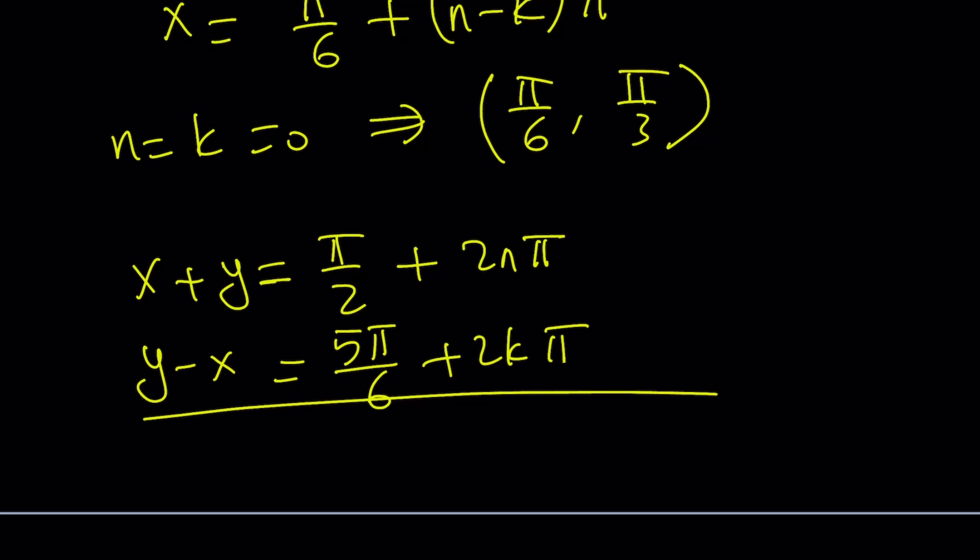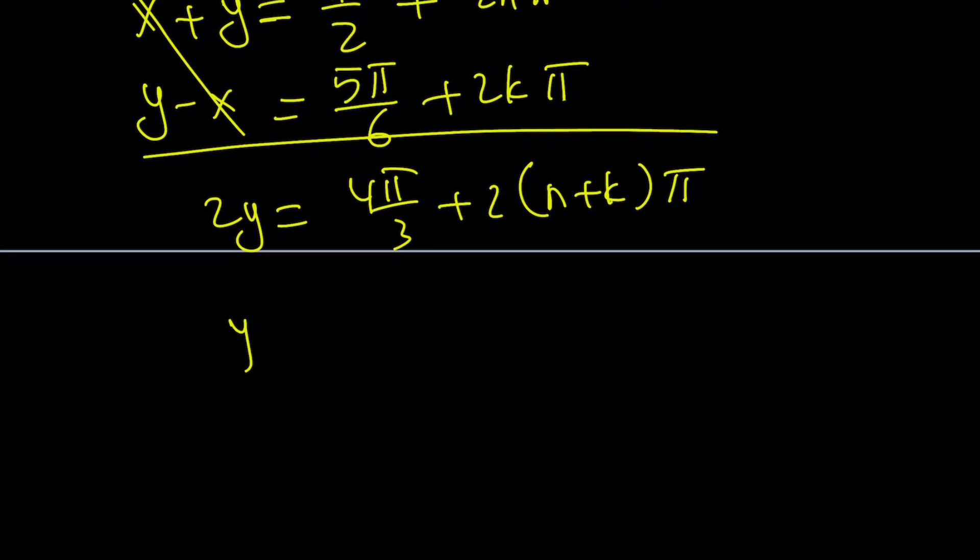We're going to add these up. x cancels out, 2y equals 3 pi over 6, 8 pi over 6, which is 4 pi over 3, plus 2 times n plus k pi. And then by division, both sides by 2, you're going to get 2 pi over 3, plus n plus k pi.